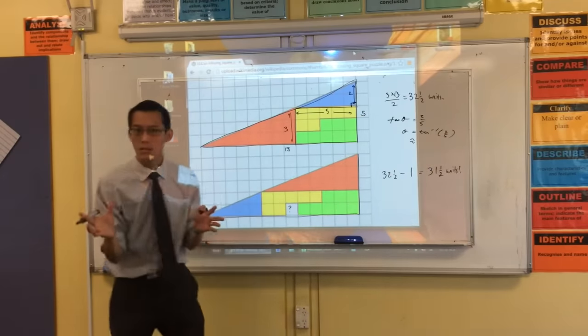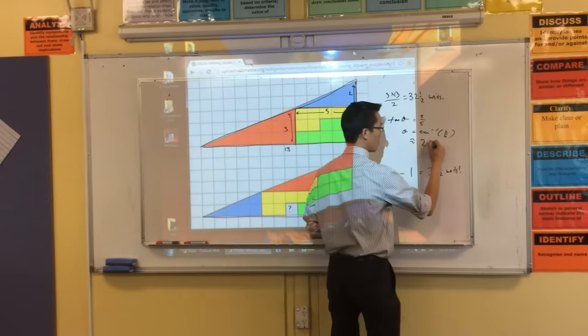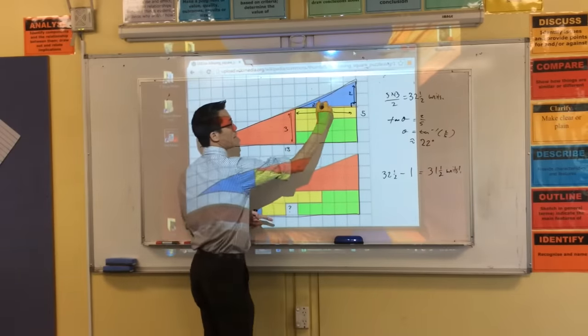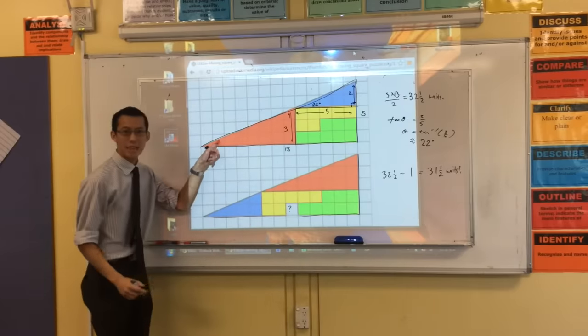Which gives you theta equals tan inverse of 2 fifths, which someone could tell me. Just give me nearest degree. 22 degrees. 22 degrees, okay?